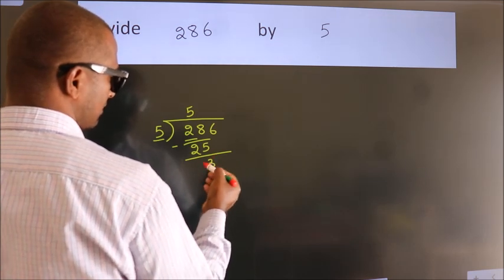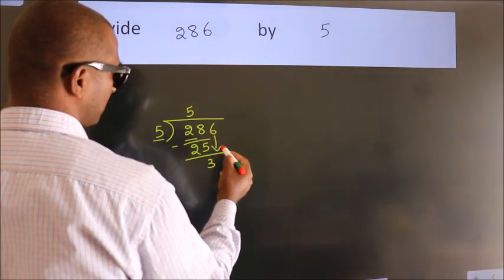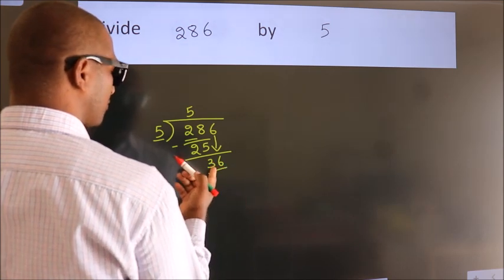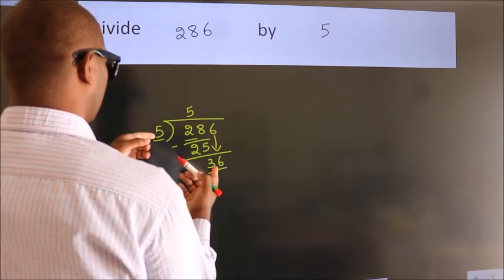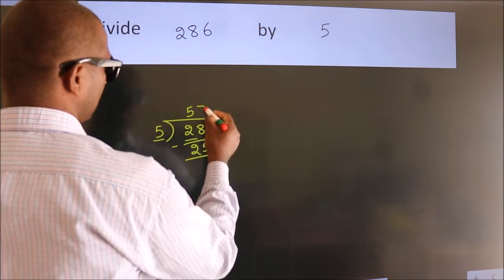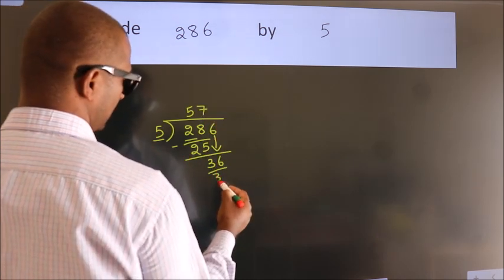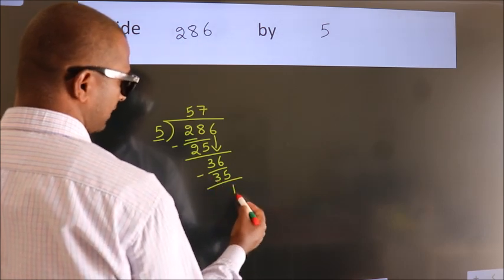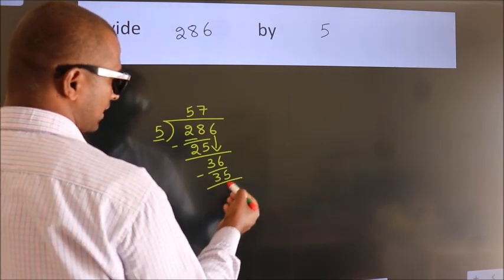After this, bring down the beside number. So, 6 down. So, 36. A number close to 36 in the 5 table is 5 times 7 equals 35. Now we subtract. We get 1. After this,